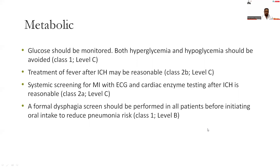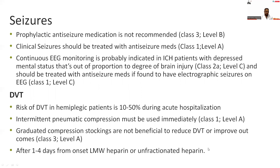Protamine sulfate can be used for reversal of heparin. Platelet transfusion in ICH is uncertain and is used only when the patient requires surgery or thrombocytopenia is present. Metabolic correction includes avoiding hyper- and hypoglycemia, treatment of fever, and systemic screening with ECG and cardiac enzyme testing after ICH. Formal dysphagia screening before starting oral intake is recommended. Seizure prophylaxis is not recommended; only active seizures should be treated with anti-epileptics. Continuous EEG monitoring is required in patients who are disproportionately disoriented relative to the degree of brain injury. DVT affects 10–15% during hospital stay; intermittent pneumatic compression must be used immediately. Graduated compression has no role. Heparin can be started after 1–4 days once the hematoma stabilizes.